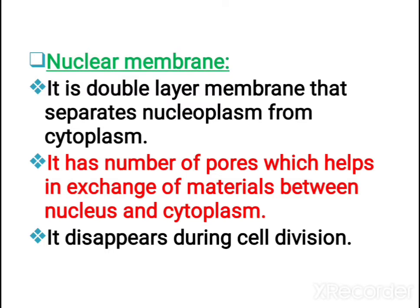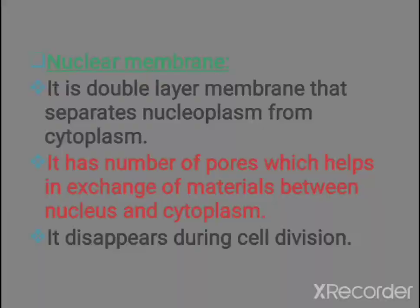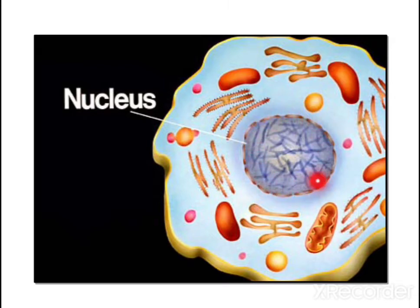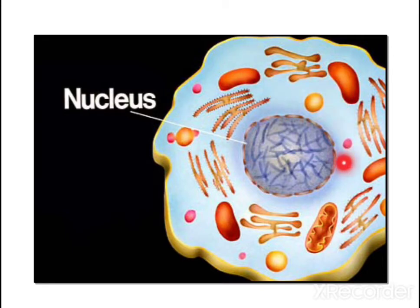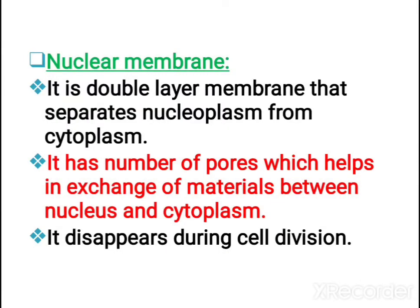Let us study the nuclear membrane. It is a double-layered membrane that separates the nucleoplasm from the cytoplasm. The fluid-like structure seen inside the nucleus is called nucleoplasm, and outside from the nuclear membrane to the plasma membrane is the cytoplasm. The nuclear membrane has small pores that help in the exchange of materials between the nucleus and cytoplasm. The nuclear membrane disappears during cell division.